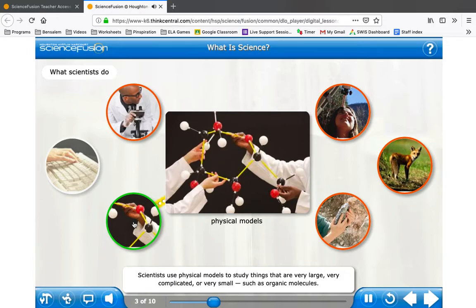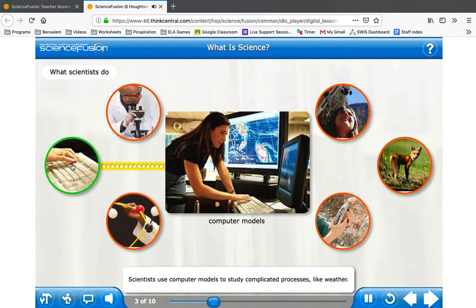Scientists use physical models to study things that are very large, very complicated, or very small, such as organic molecules. Scientists use computer models to study complicated processes, like weather.